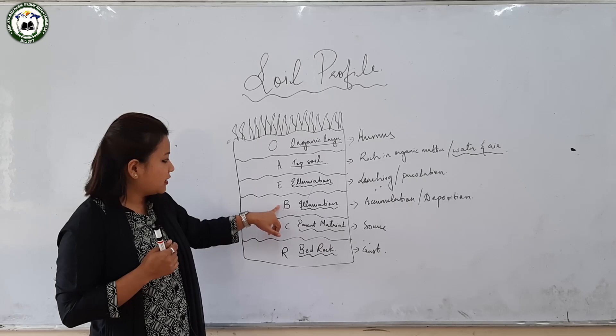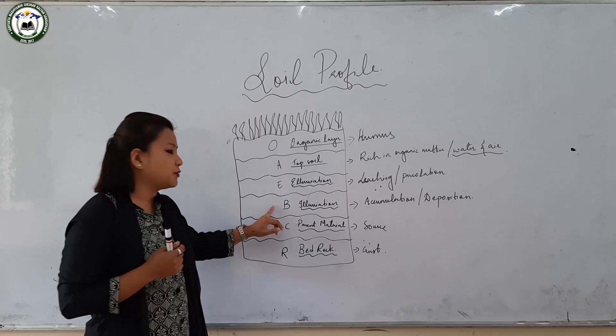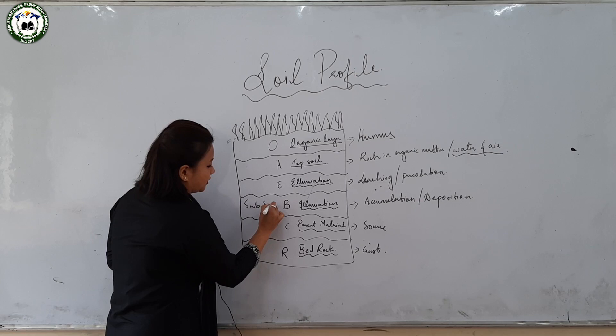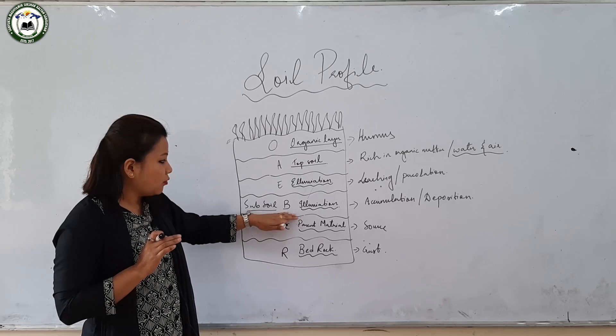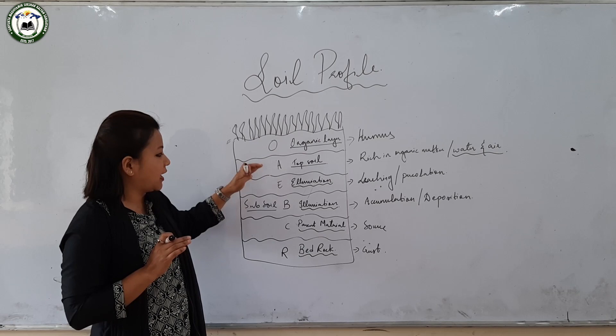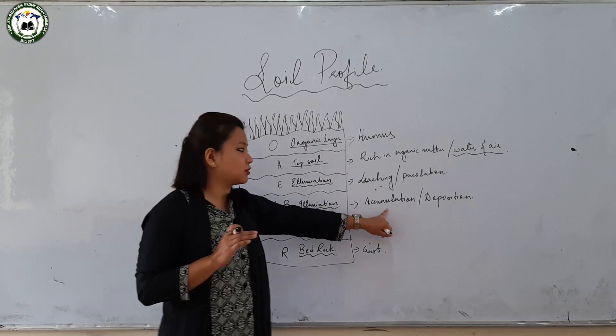The E layer is called the eluviation horizon because materials from the O and A layers tend to wash away or get leached down to the E horizon, and further leach down to the B horizon. Below the E horizon is the B horizon, regarded as the zone of accumulation and deposition — also regarded as sub-soil. This part is hard in nature and there is no presence of organic matter. Whatever minerals are in the O, A, and E horizons are washed down to the B horizon, making it the zone of illuviation.